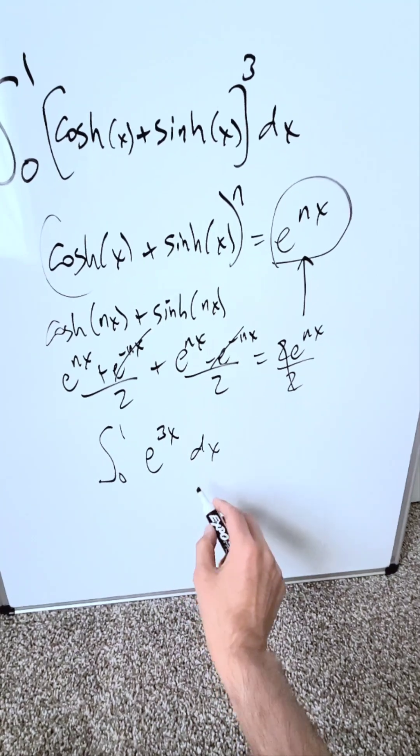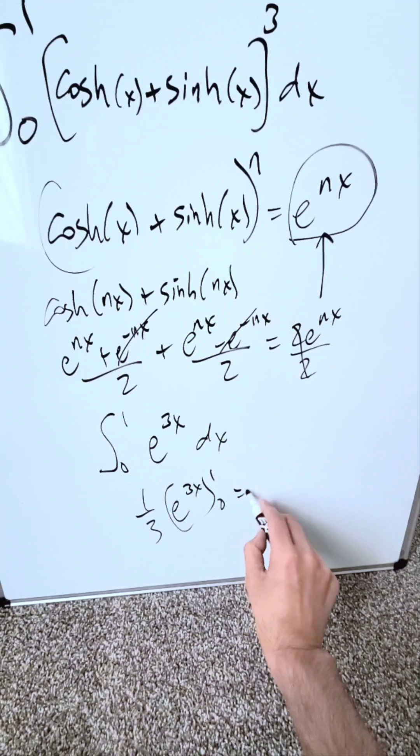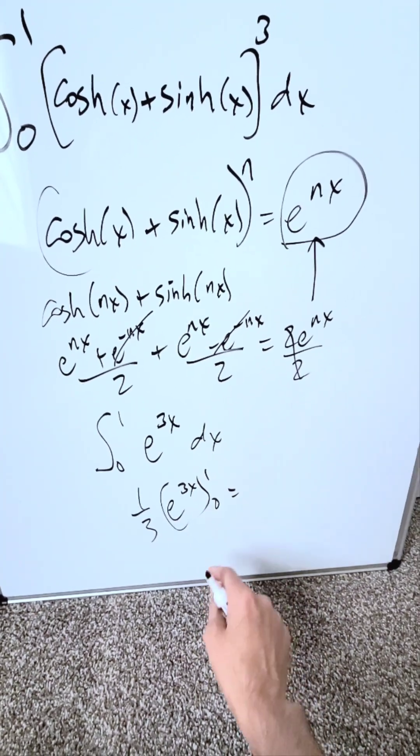You know this is easy. The anti-derivative here is going to be 1/3 e to the power of 3x, and then you're going to feed in your limits: upper limit, lower limit, the difference of the two.